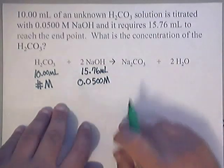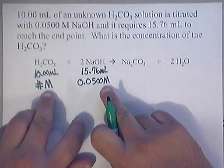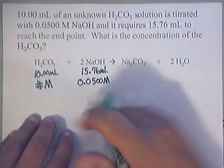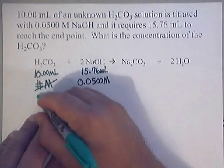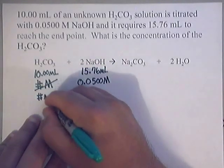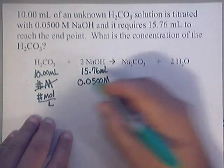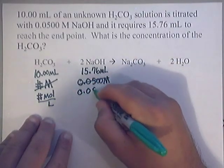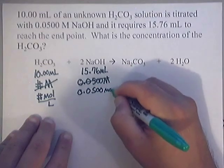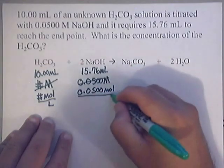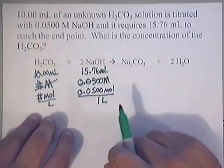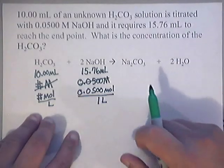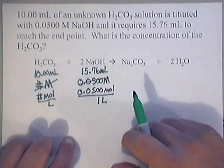Now, one thing that you need to realize is when they are giving you a concentration, they're actually telling you the number of moles over liters. So oftentimes I have my students to rewrite this as number sign moles over liters. Same thing here. Rewrite this number as 0.0500 moles per liter. That makes it easier when it comes time to do our stoichiometric calculations, basically our dimensional analysis.